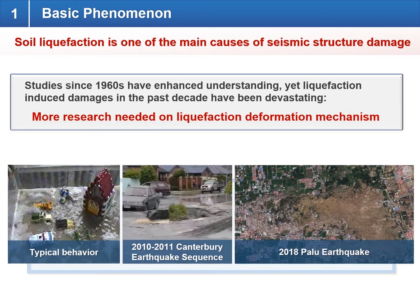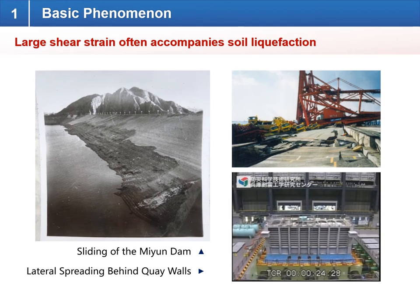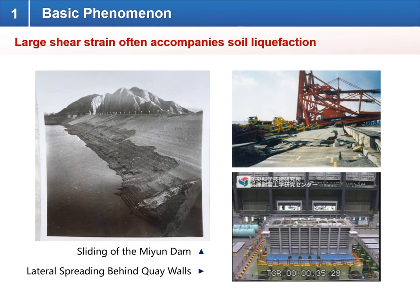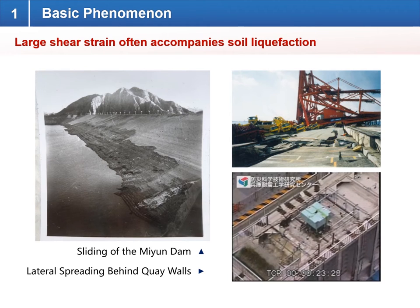Especially after the 2018 Palu earthquake, where we saw large shear deformation of liquefied soil that traveled over a kilometer. During several past earthquakes we have observed many soil liquefaction-induced failures associated with large shear strain. For example, to the left we can see the sliding of the Muin dam during the 1978 Tangshan earthquake in China, and we have also often observed lateral spreading behind quay walls, as was seen in the Kobe earthquake.